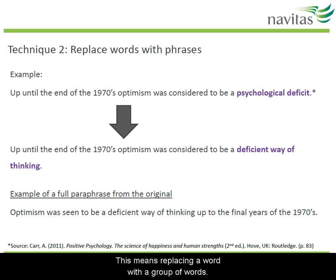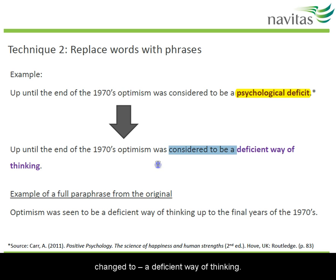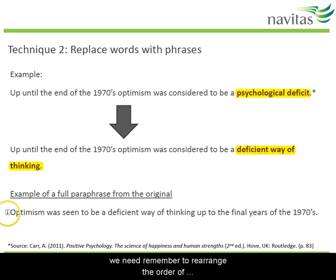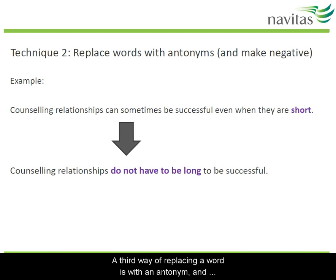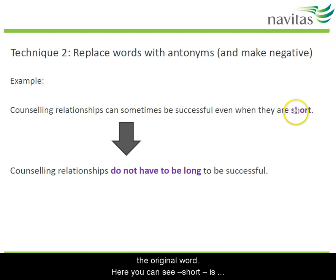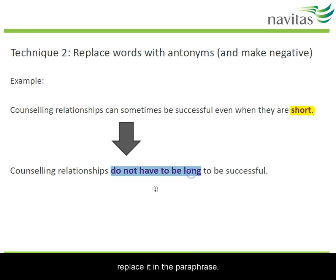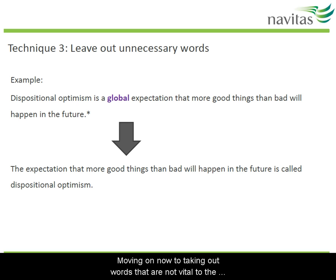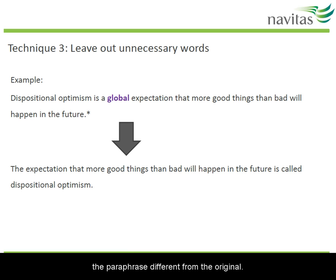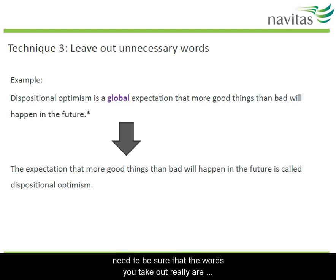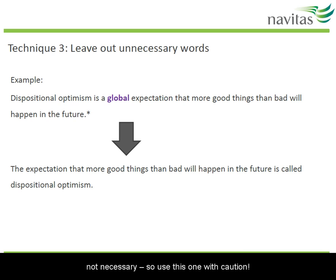Another way to replace words is with phrases — replacing a single word with a group of words. For example, 'psychological deficit' can be changed to 'a deficient way of thinking.' For a successful paraphrase, remember to also rearrange the order of the information in the sentence. A third way of replacing a word is with an antonym, making the antonym negative to give the same meaning as the original word. For example, 'short' can be replaced with 'not long.' Finally, you can also take out words that are not vital to the meaning. However, use this technique with caution, as you need to be sure the words you remove really are not necessary.